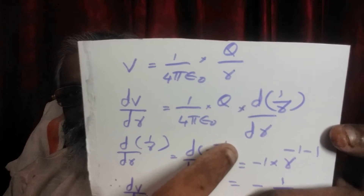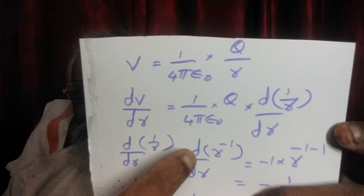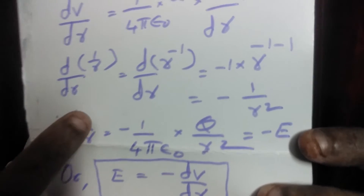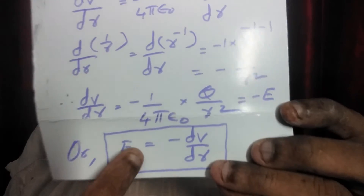Now, 1/R is R raised to minus 1, which is of the form X raised to N. The differential of X raised to N is N times X raised to (N−1). So the differential of R raised to minus 1 is minus 1 times R raised to minus 2, or minus 1/R². This is the differential of 1/R. Finally, we get dV/dR = −(1/4πε₀) × (Q/R²), which is the expression for electric intensity E. Therefore, dV/dR = −E, or electric intensity E = −dV/dR.